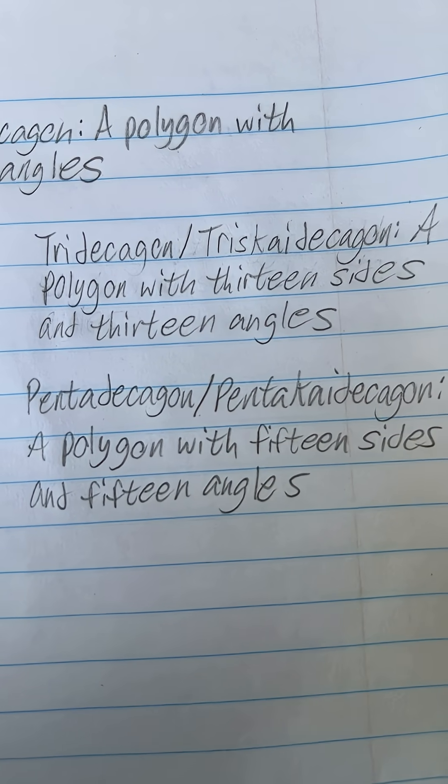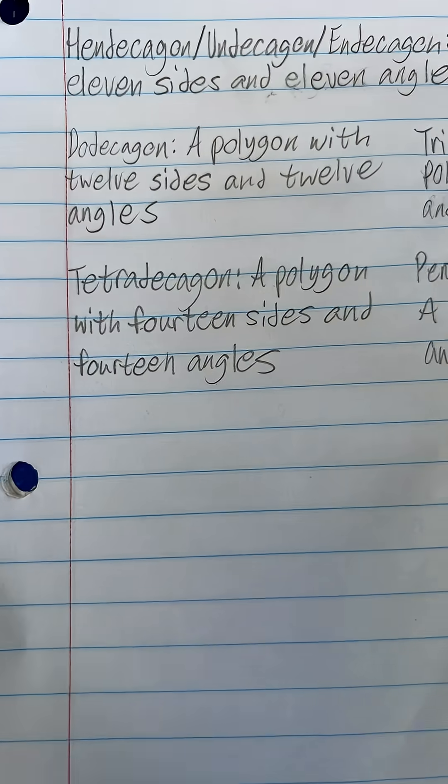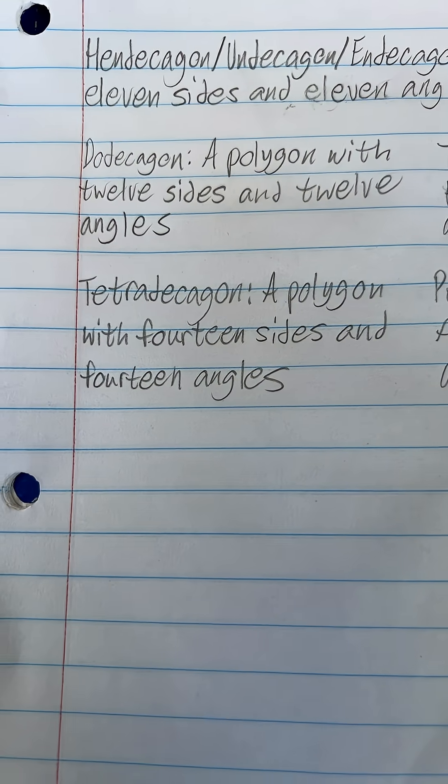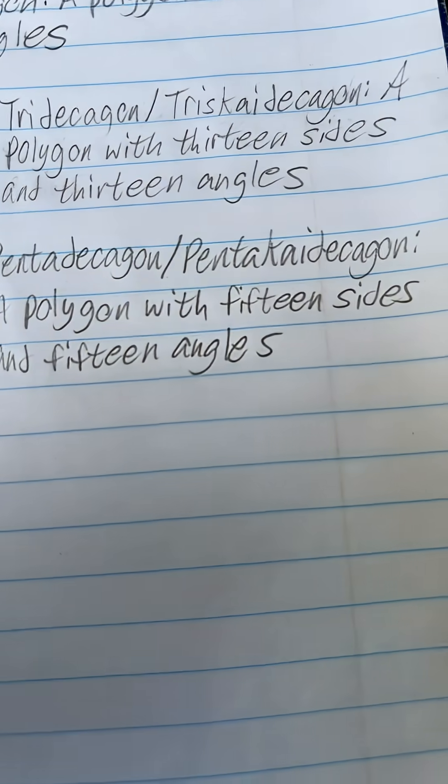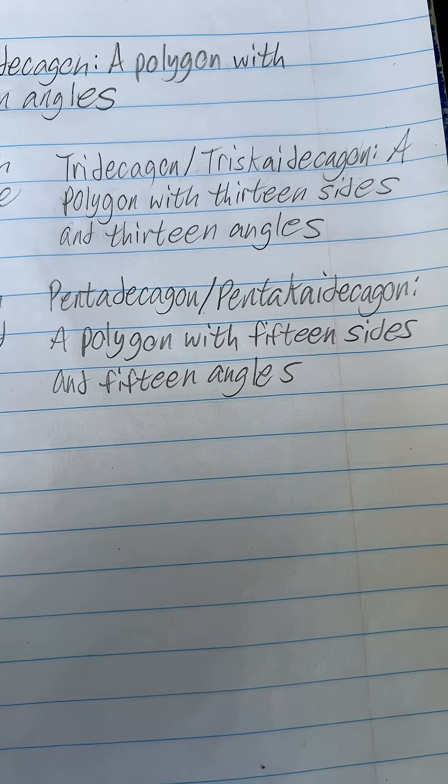A tridecagon or triskaidecagon is a polygon with 13 sides and 13 angles. A tetradecagon is a polygon with 14 sides and 14 angles. And a pentadecagon or pentakidecagon is a polygon with 15 sides and 15 angles.